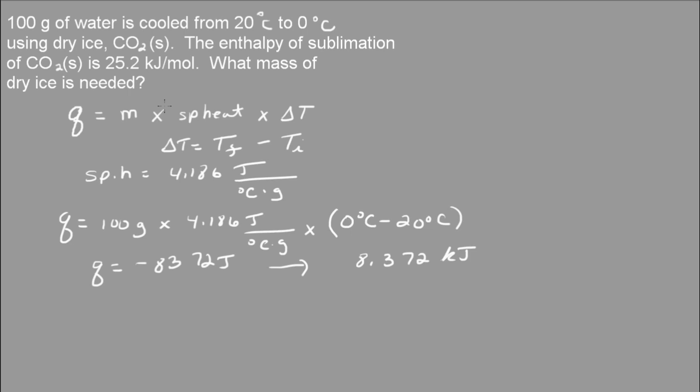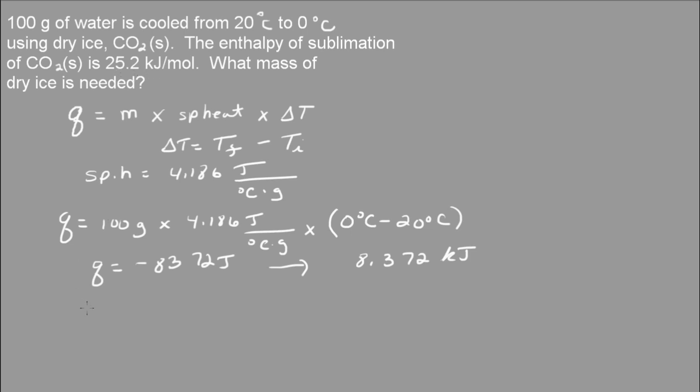The enthalpy of sublimation for carbon dioxide states that to sublime one mole of carbon dioxide, we need 25.2 kilojoules of energy. So one mole over 25.2 kilojoules. Now we just need to convert the moles of carbon dioxide to grams. The molar mass is 44 grams.